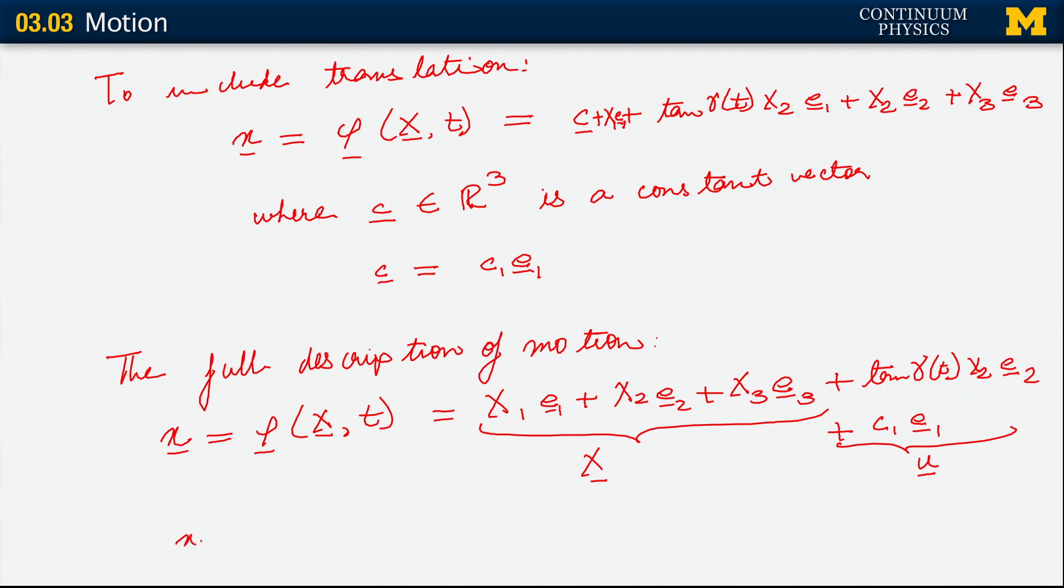So here we see through this example, via the special case, the elucidation of a more general principle, which is that little x, which is equal to φ of X comma t, is always representable as the reference position X plus u, where u is the displacement vector.